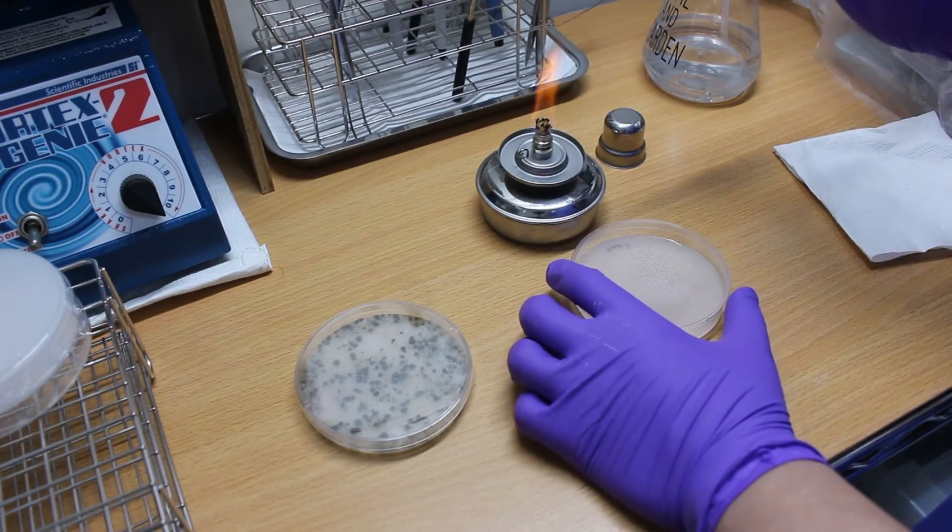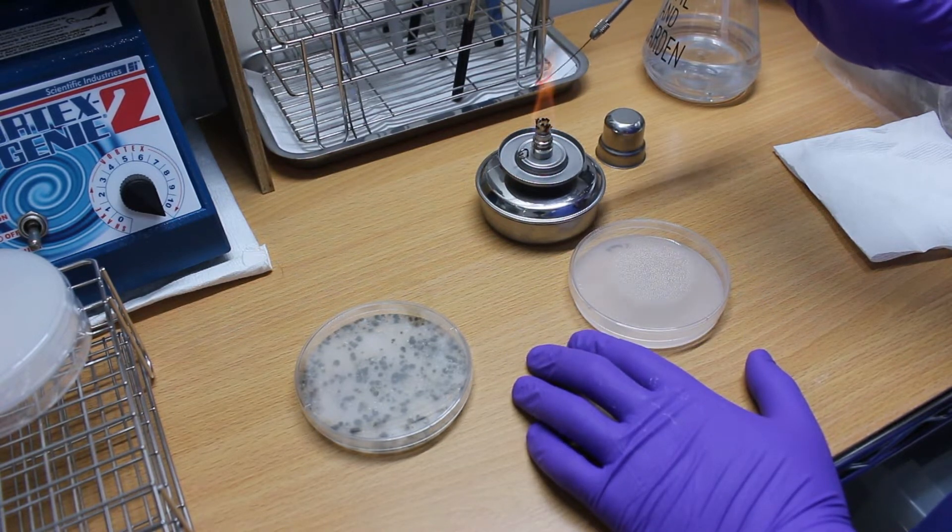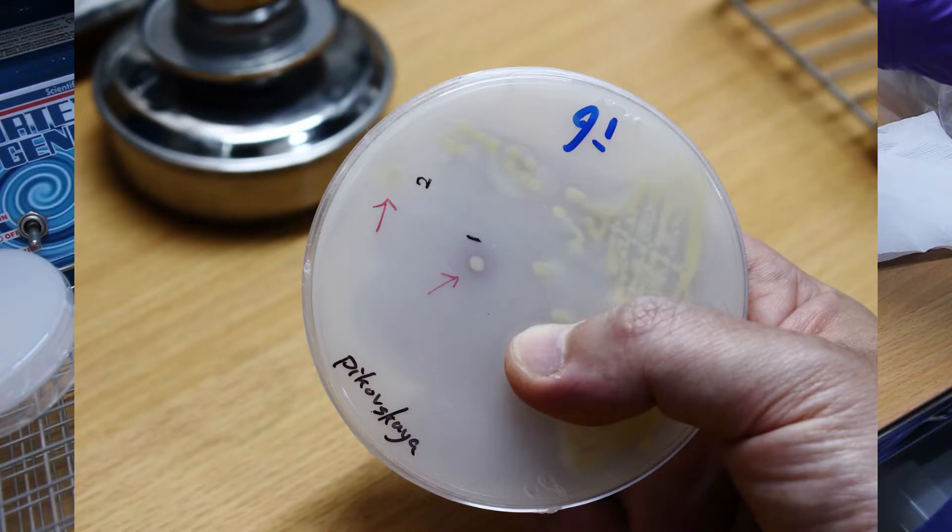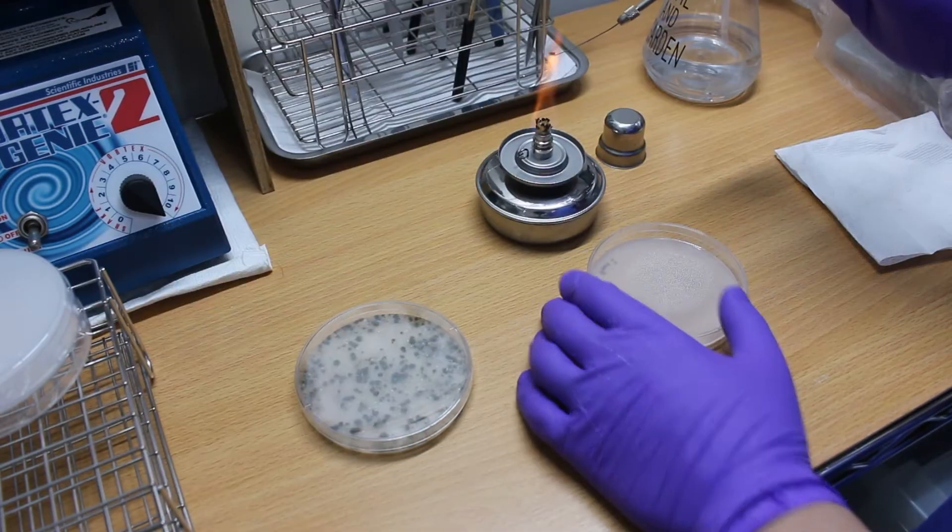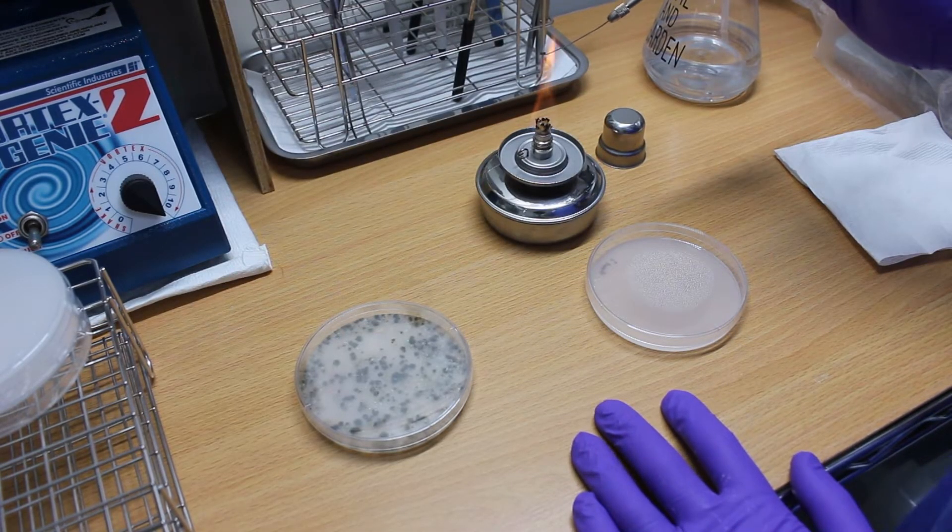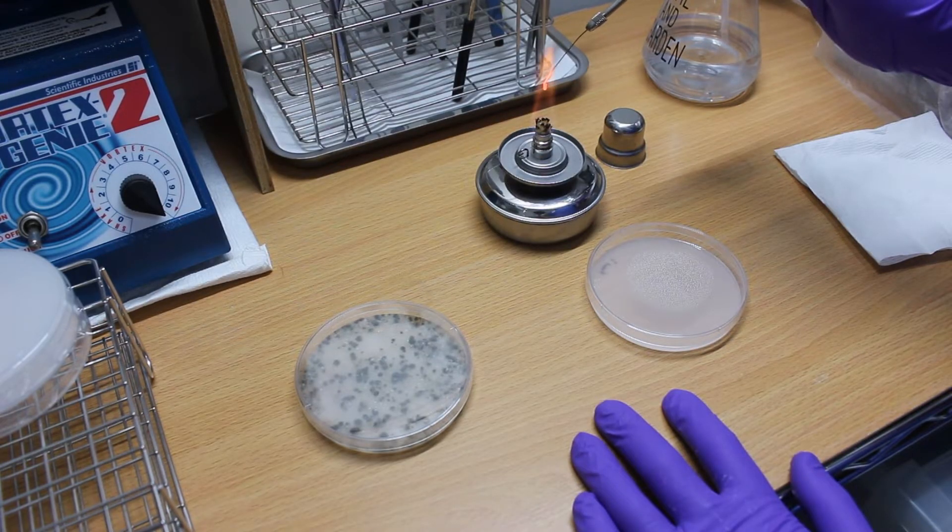If everything goes as planned, after the culture, we will obtain a pure single colony that should look like the one in the video, and the transparent ring will be more visible. At this point, we know that we have successfully isolated the phosphate solubilizing bacteria.